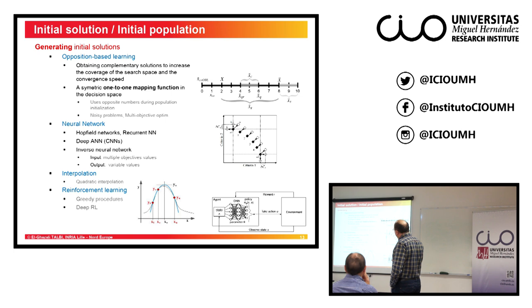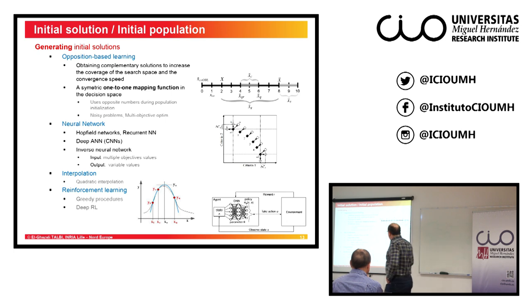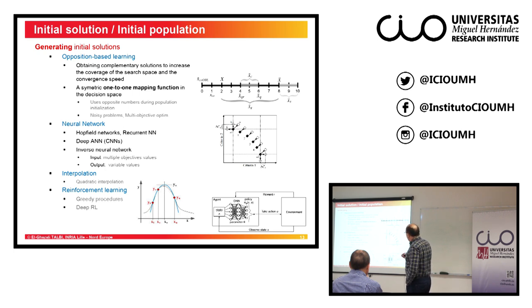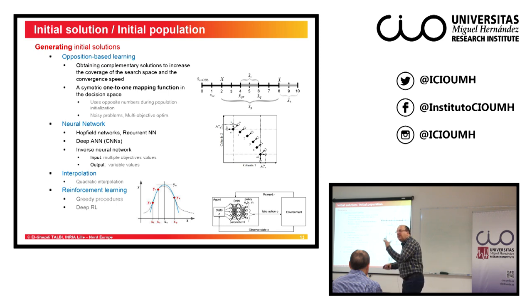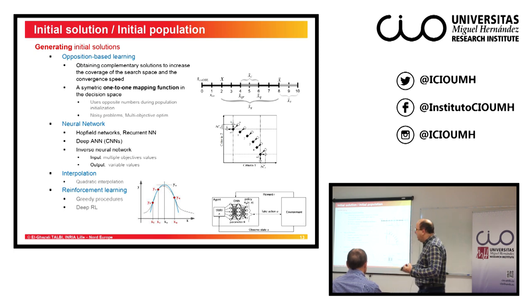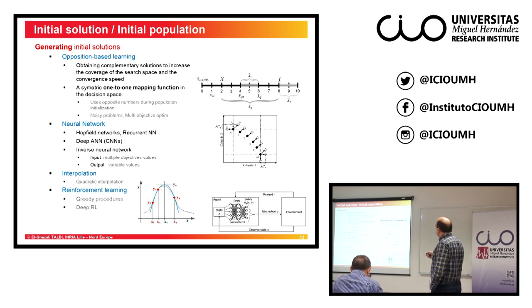Finally, you can use machine learning to generate good initial solutions directly. Techniques include interpolation, neural networks, and opposition-based learning to very quickly find good solutions instead of generating random ones. Reinforcement learning can be considered a greedy technique for generating solutions. Neural networks have been used in multi-objective optimization to predict expected efficient values. The idea is to use machine learning techniques to find very quickly good initial solutions.